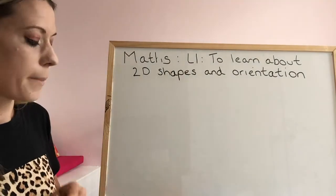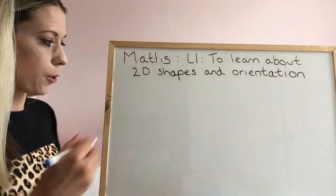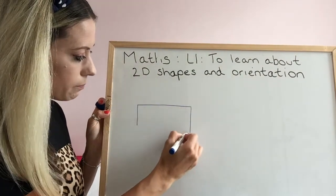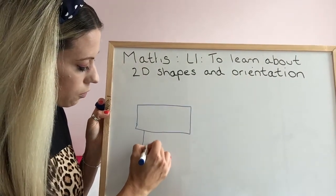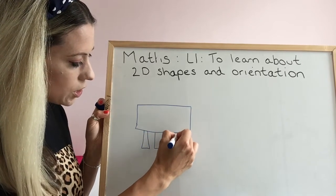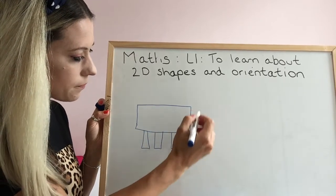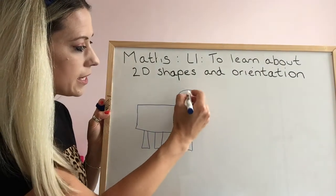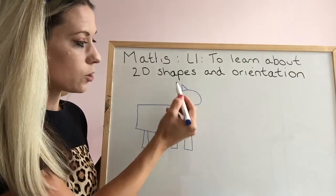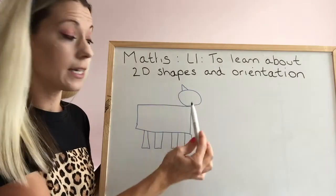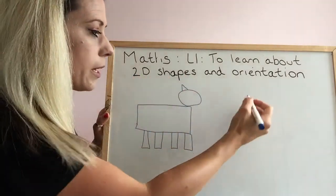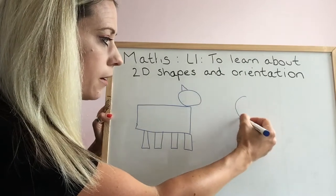Can you remember the dog that I drew? It had a long rectangle for the body, and it had four rectangles. Obviously you would use a ruler if you're drawing. It had a circle for the head and then it had a triangle. Now this triangle is orientated upwards. Have a look at my triangle in this picture here.